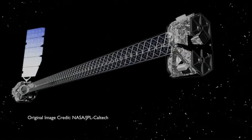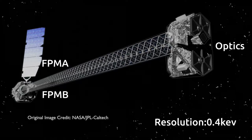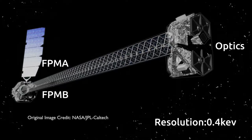That's right, NuSTAR has two telescopes aboard. The focal plane module A and focal plane module B, often abbreviated to FPMA and FPMB, with energy resolutions of approximately 0.4 KEV.